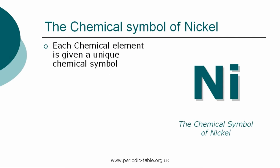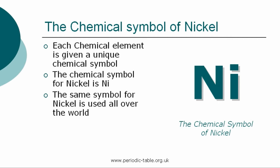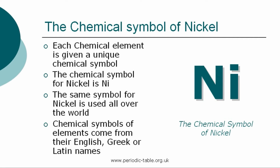Each chemical element is given a unique chemical symbol, which is used all over the world. The chemical symbol for nickel is Ni. The chemical symbols of elements come from their English, Greek, or Latin names. The first letter of a symbol is always a capital letter, and if there are any subsequent letters, they are expressed in lowercase.